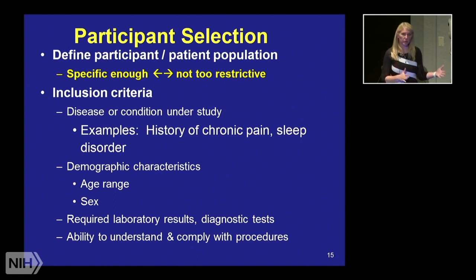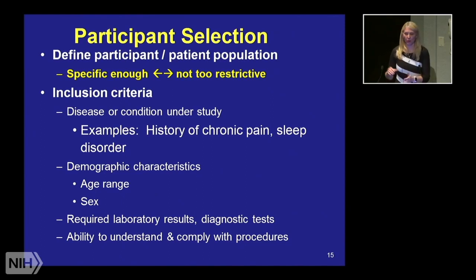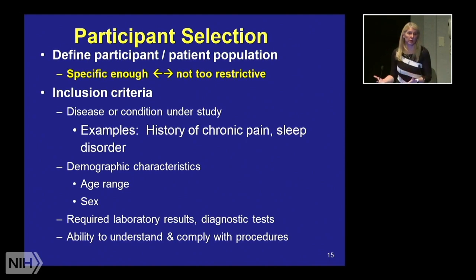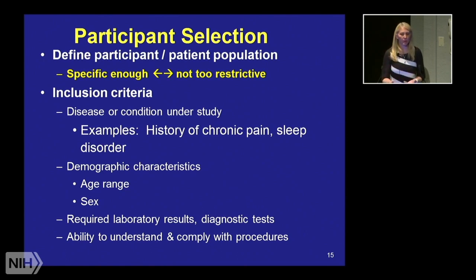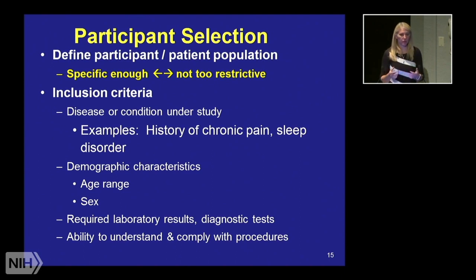You want some demographic characteristics — are you limiting the study to only men or only women, and is there a scientific rationale? Is there a specific age range? For example, if no one has looked at treatment of low back pain in older adults over 65, that may be a population worth targeting. If recruiting patients with diabetes, is there a specific hemoglobin A1C level they must have on baseline screening, or other laboratory results or diagnostic tests they need to meet? Also consider the ability to understand and comply with study procedures, and whether study instruments available only in English or Spanish are valid if translated.